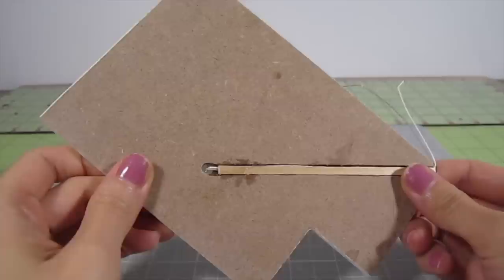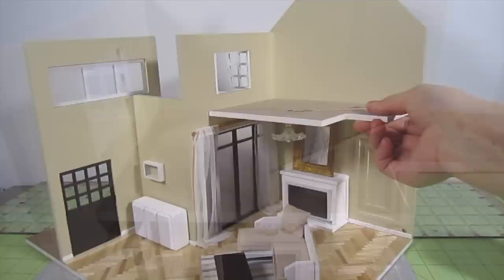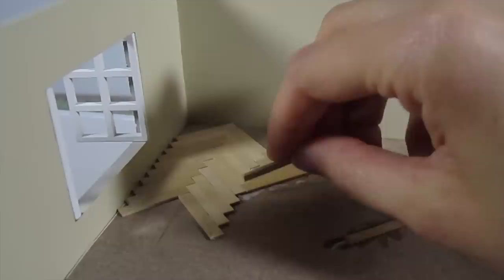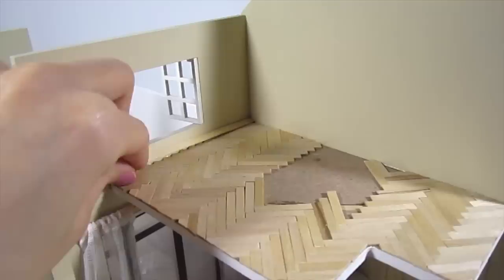Now you can glue this floor into the dollhouse creating a loft. Just like we did for the ground floor, install hardwood in a herringbone pattern. You'll notice that I leave the center area open because it will be covered by a bed. Clean up the edges with coffee stirrers to hide the gaps.